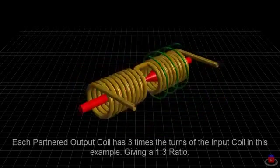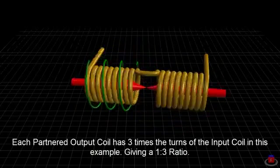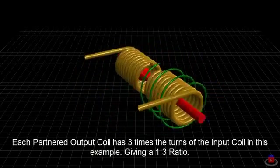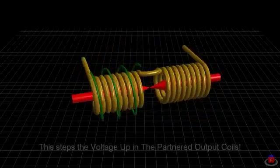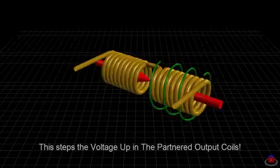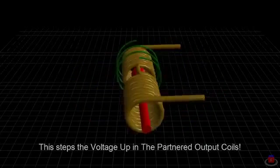Each partnered output coil has three times the turns of the input coil in this example, giving a 1 to 3 ratio. This steps the voltage up in the partnered output coils. Current is not stepped down as a result.